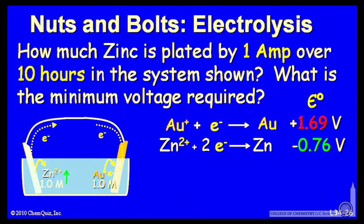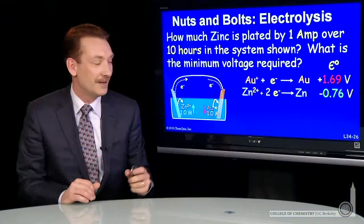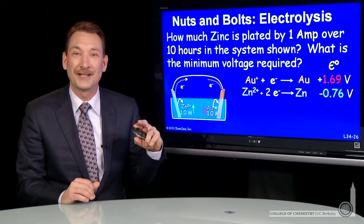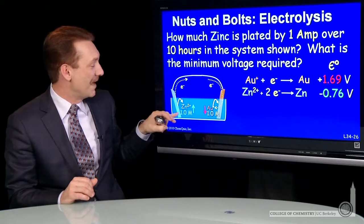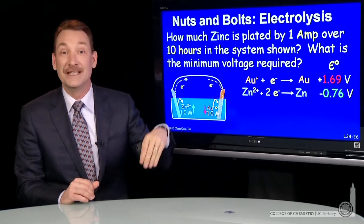So zinc ion concentration would increase, gold ion concentration would decrease. The mass of the gold electrode would increase, the mass of the zinc electrode would decrease.